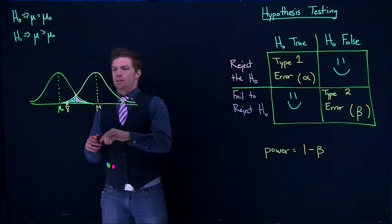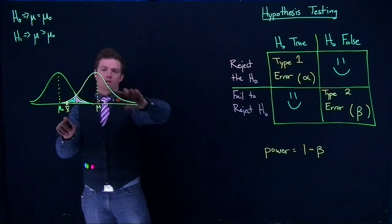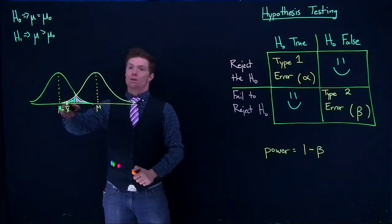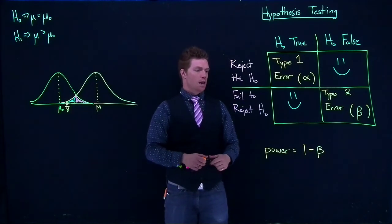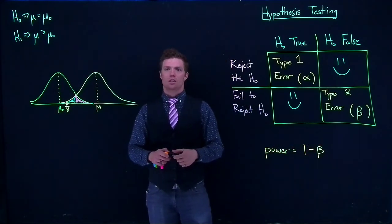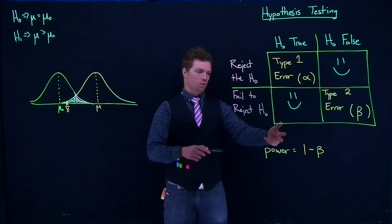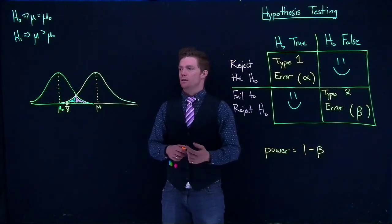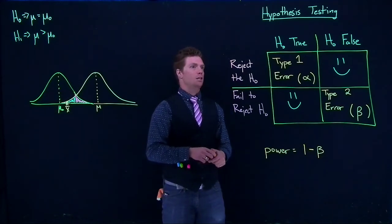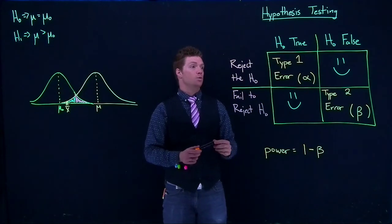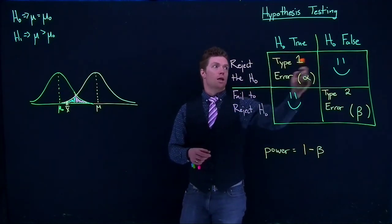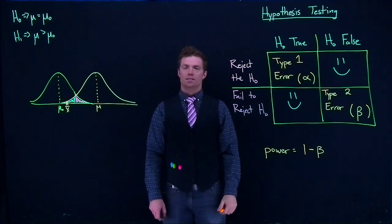Graphically, a Type 2 error is when the null hypothesis is false — this is the true distribution — and we had a weird result that made it look like the data was in line with what the null hypothesis was doing. We want our tests to be powerful, and that is just 1 minus beta. So if I give you the power of a test, you can tell me the beta value, or vice versa. To minimize beta, we want to increase our sample size. This is our table of all possible outcomes: we're trying to avoid Type 1 and Type 2 errors and make correct decisions — rejecting when the null hypothesis is false, and failing to reject when the null hypothesis is actually true.